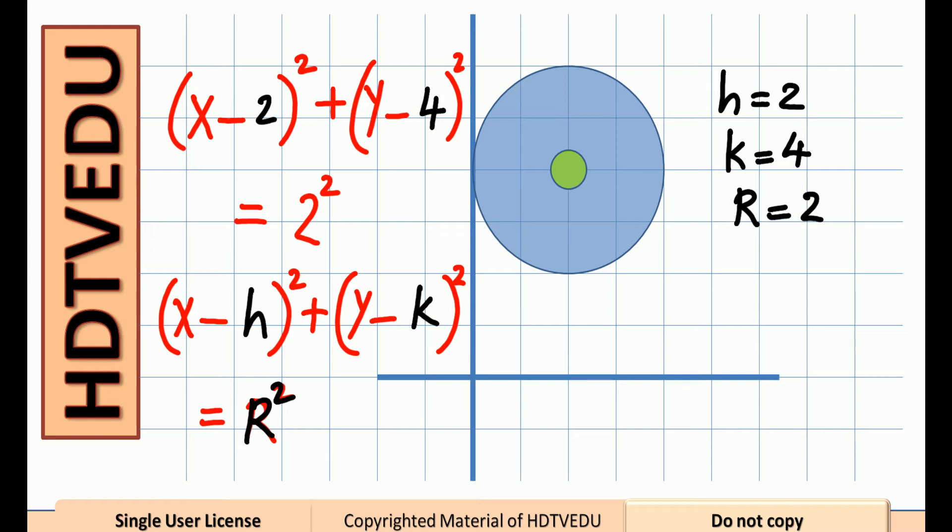Where are we? The center is at 2, 4. So, 1, 2. And then, what is k? k is 4 units.